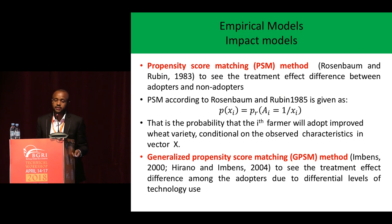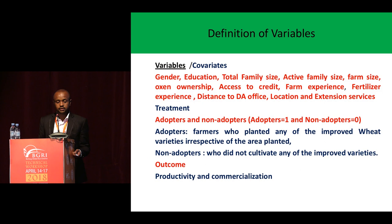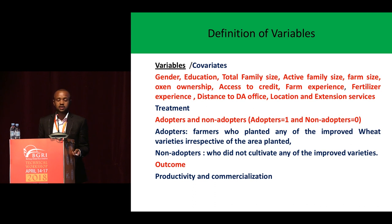The other main interest of this paper is estimating the impacts of adoption of improved wheat technologies. The first method uses propensity score matching to see the treatment effect difference between adopters and non-adopters. The second is the generalized propensity score matching method to see treatment effect differences among adopters. The treatment variables are adopters — farmers who planted any improved wheat variety regardless of area planted — and non-adopters, who did not cultivate any improved wheat variety. The outcome variables are wheat productivity and commercialization.